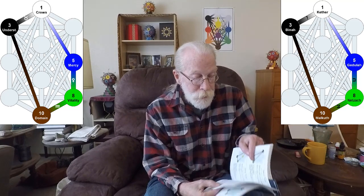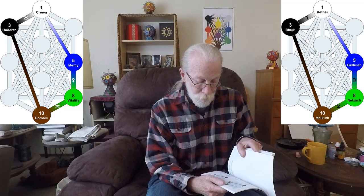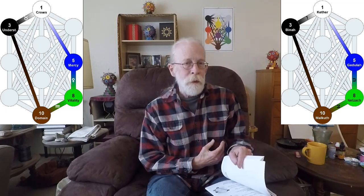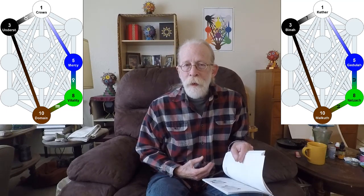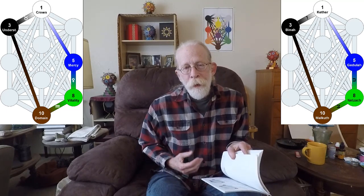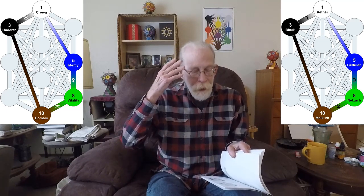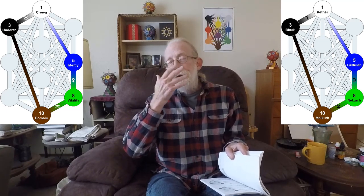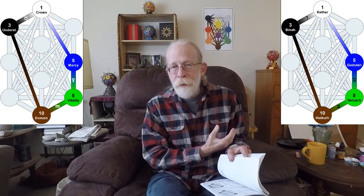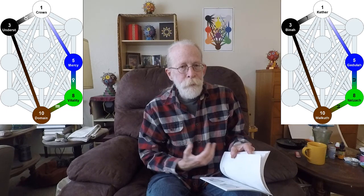And the last gate here, gate number 154, is our pentangle. It starts in Netzach, follows Tzadi, Aquarius, down to Malkuth, takes that hidden path up to Bina, takes the path of Vav, Taurus, up to Kether, takes that hidden path down to Gedula, and then the path of Venus down to Netzach. And then, of course, back around.